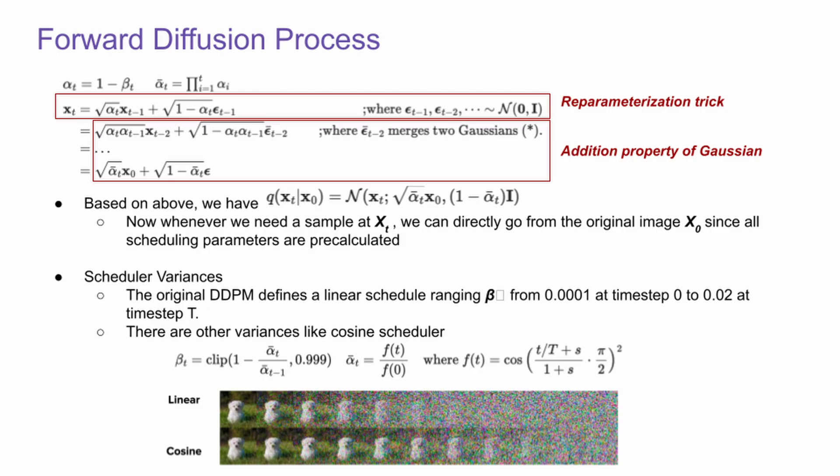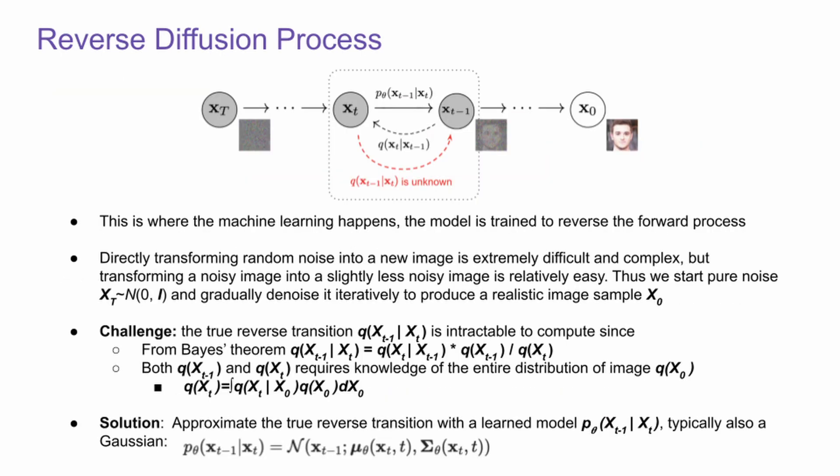This means now we can sample xt directly from the original image or text x0 since all scheduling parameters are pre-calculated. And this is about the different schedulers. You can use a linear one or you can use a cosine one.